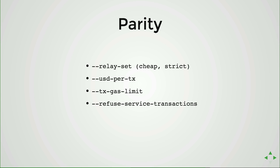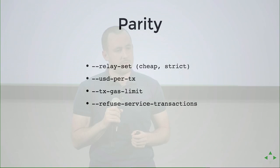There is also a transaction gas limit setting: we can refuse all transactions above some gas limit. That was introduced during the state bloat attack and some earlier attacks last year. We also have refused-service transactions — those are transactions with zero gas price that use an on-chain whitelist of contracts they're allowed to call.